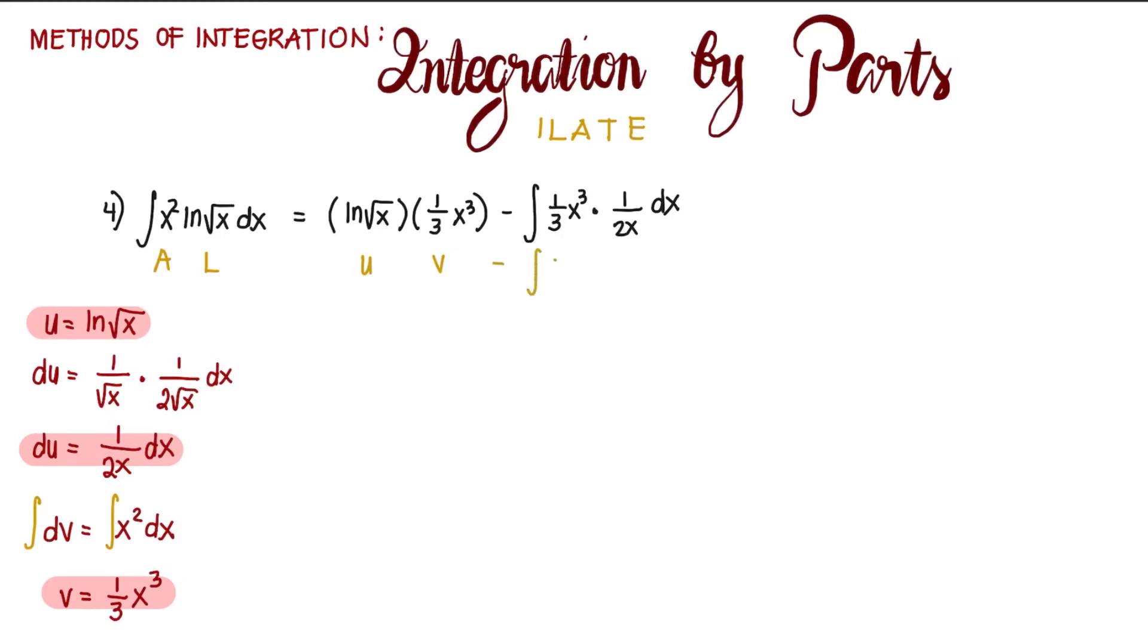Rearranging this, it would be one third x cube ln square root of x minus, multiplying the constants we get one sixth, integral of, simplifying we have x cube and x in the denominator, so what's left is x squared dx. That is already integrable.